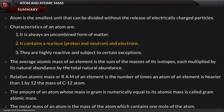Atoms contain a nucleus and electrons. They are highly reactive and subject to certain exceptions. The average atomic mass of an element is the sum of the masses of its isotopes, each multiplied by its natural abundance divided by total natural abundance.